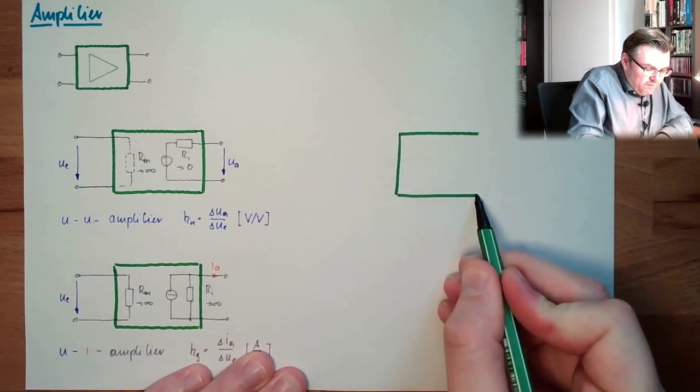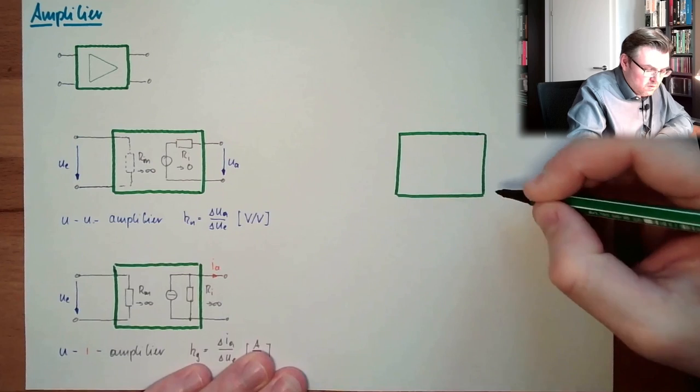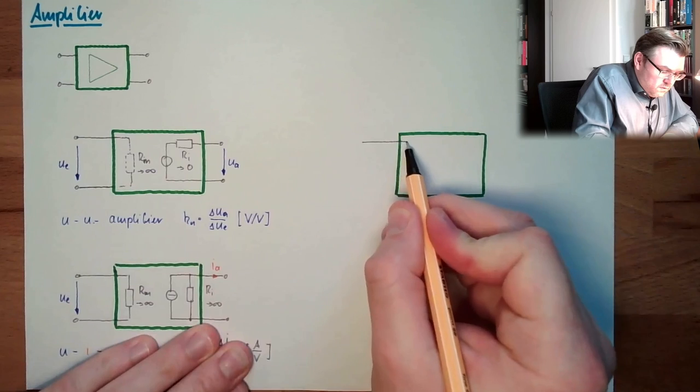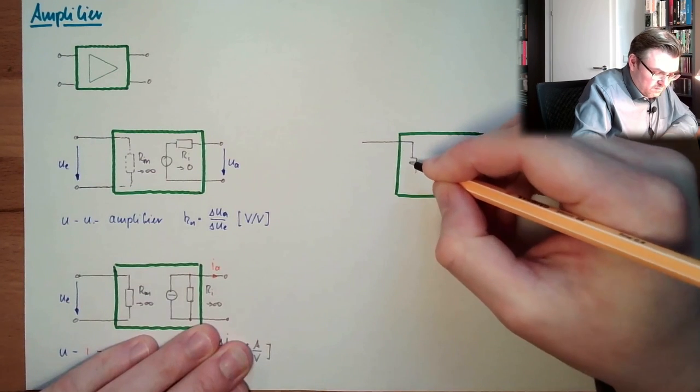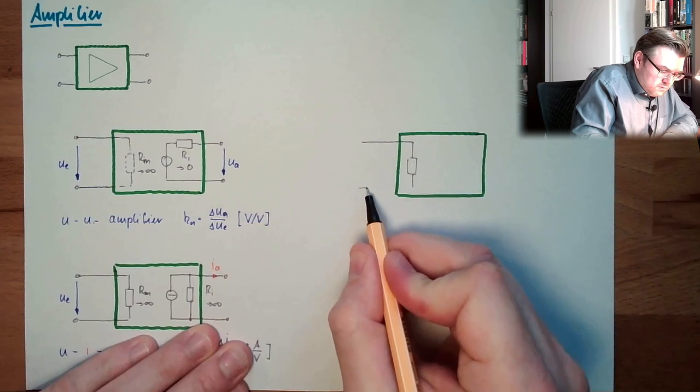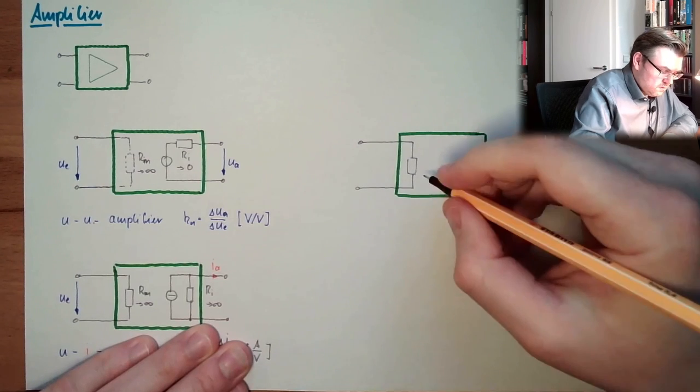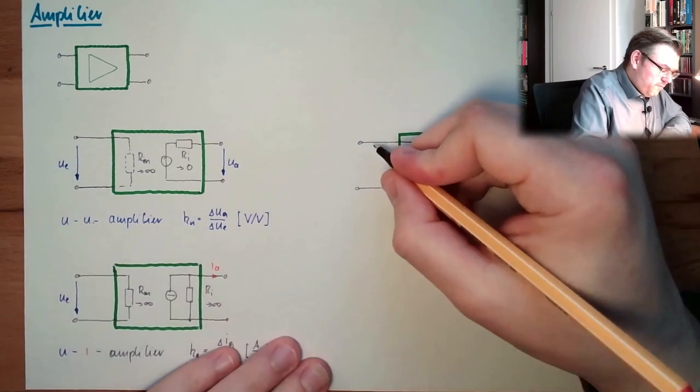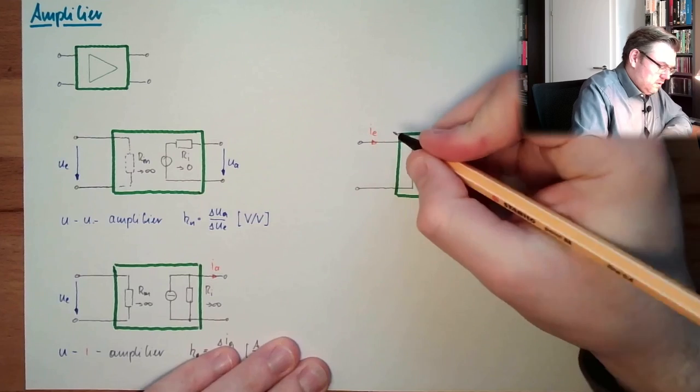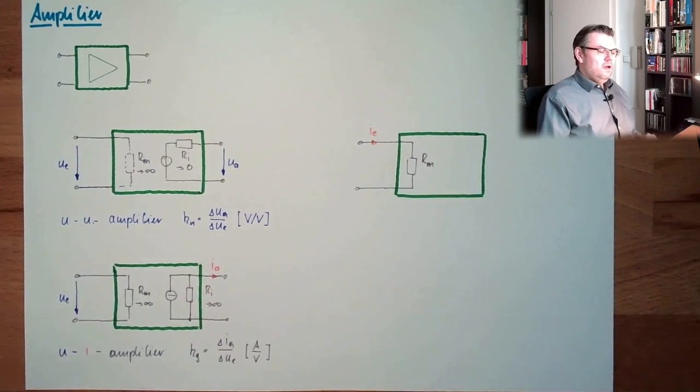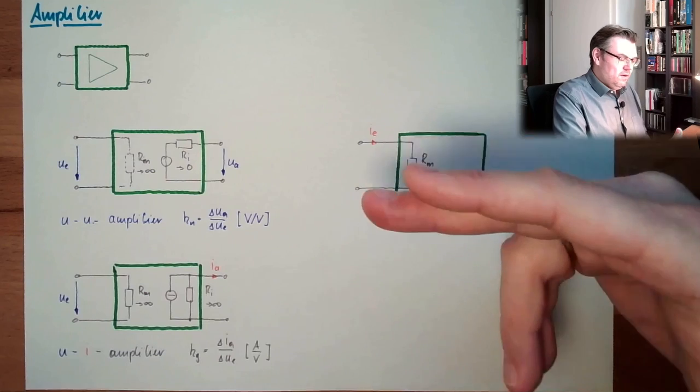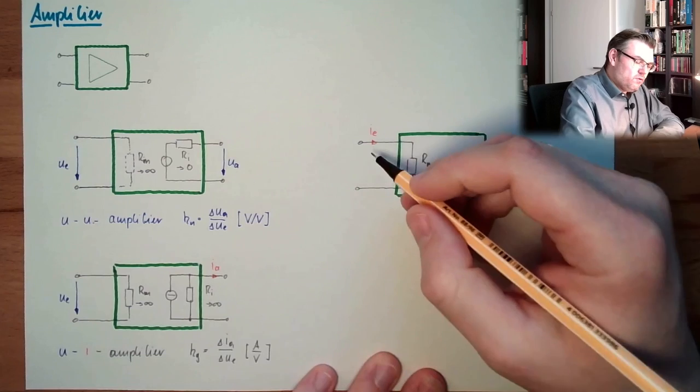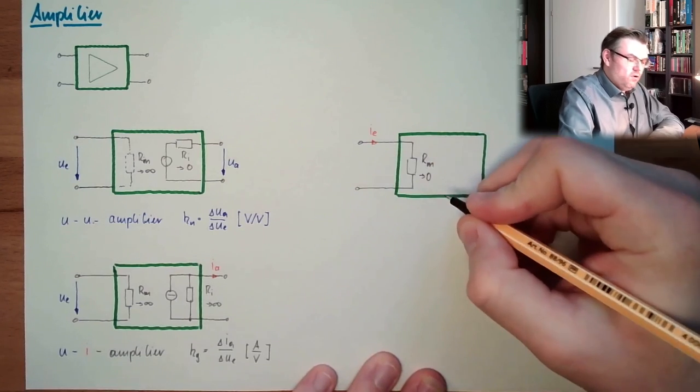So, if I have another possibility, that here, basically it looks the same. So, I have measurement resistance, Rm. However, now, we have mainly an input, Ie input. I will always write E because it's Eingang in German. So, if I want to measure current, this here shall be zero.